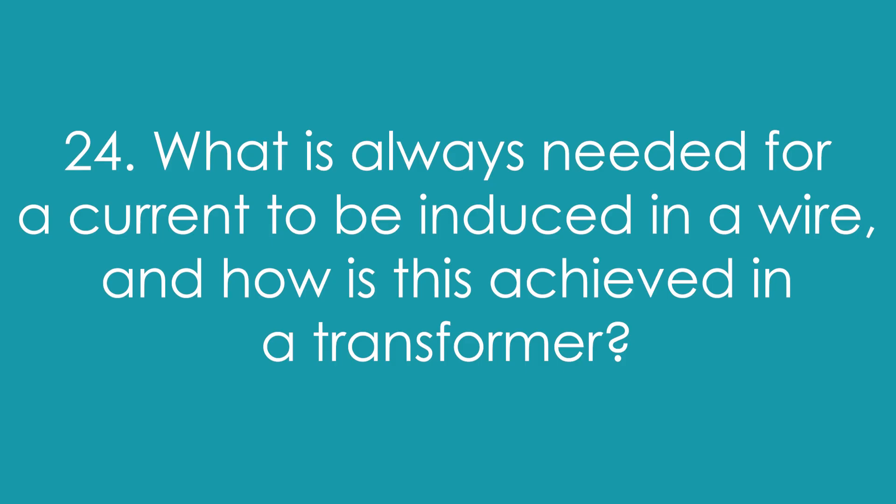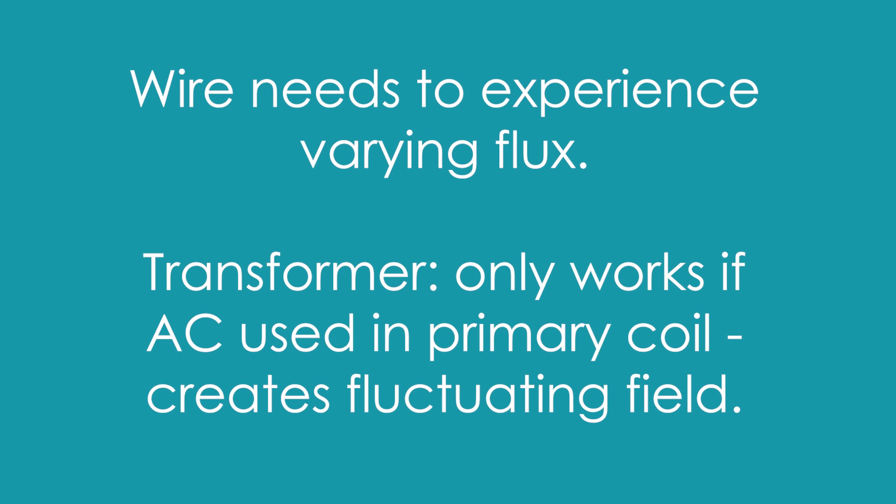Question 24: What is always needed for a current to be induced in a wire, and how is this achieved in a transformer? A wire needs to experience a varying or changing flux. Because everything is stationary in a transformer, this only works if we have AC going into the primary coil, which creates a fluctuating magnetic field. Transformers don't work with DC.